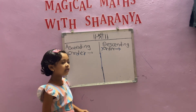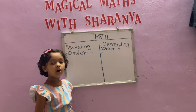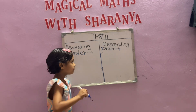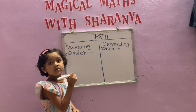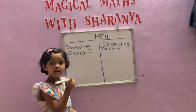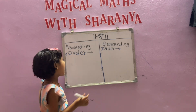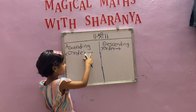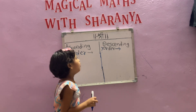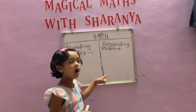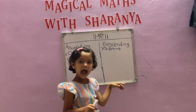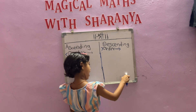In ascending order, the smallest number is first and the biggest number is last. In descending order, the biggest number is first and the smallest number is last.